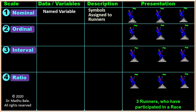In nominal scale, the variables are named. Here the variables are the three runners and we have named them A, B, and C. These are only labels and tags used to identify them. We can also use 1, 2, 3 or X, Y, Z — anything can be used to identify or classify them.